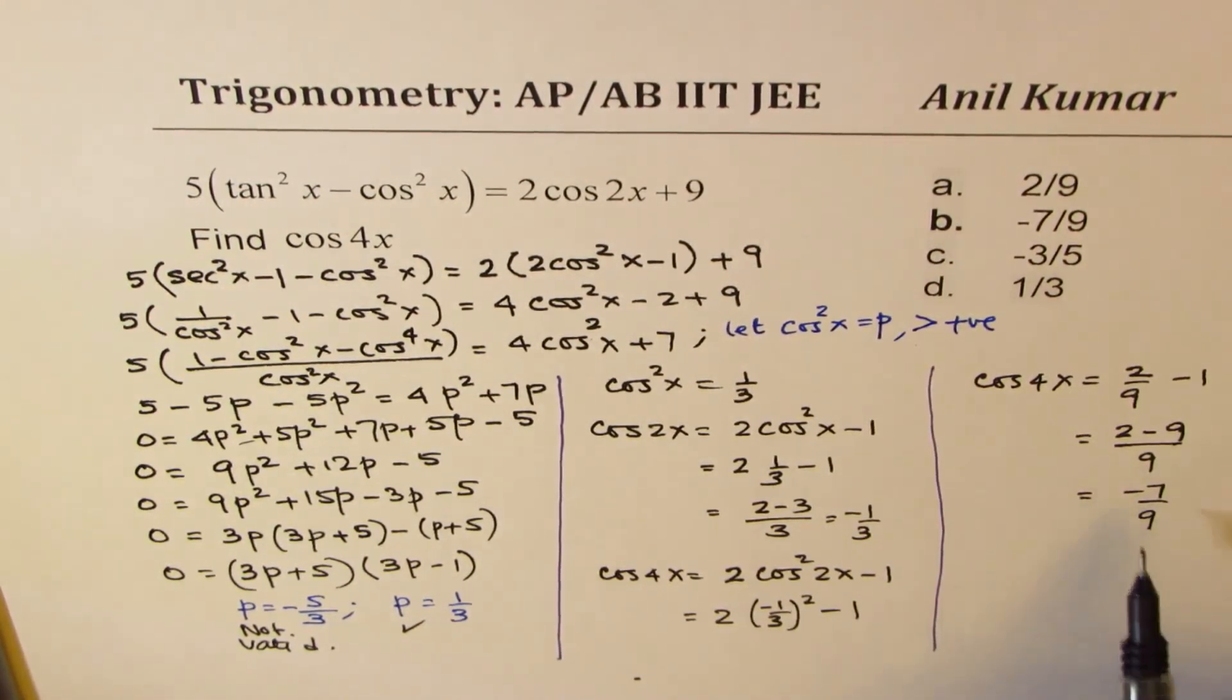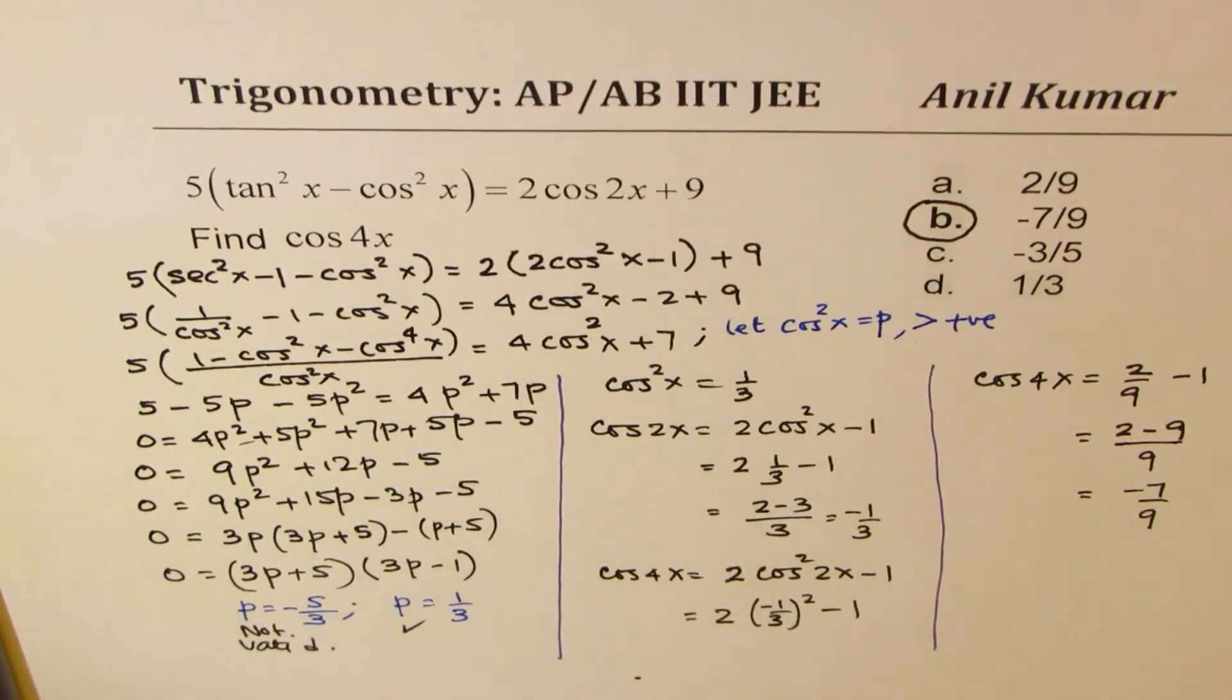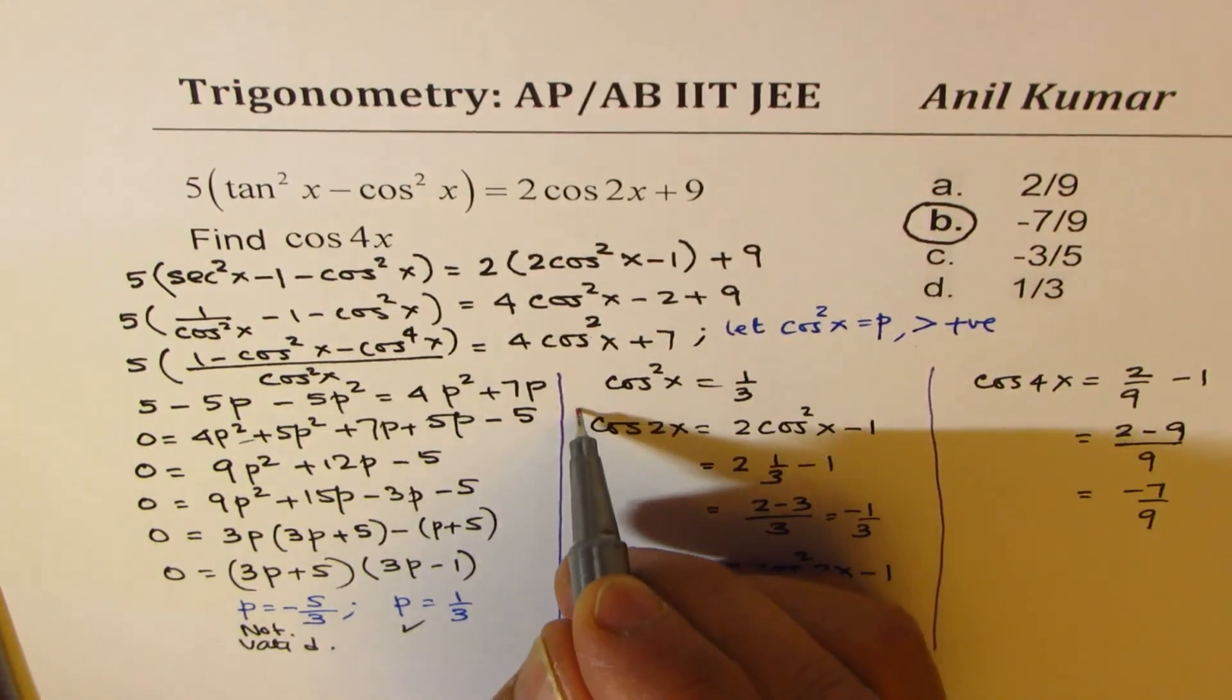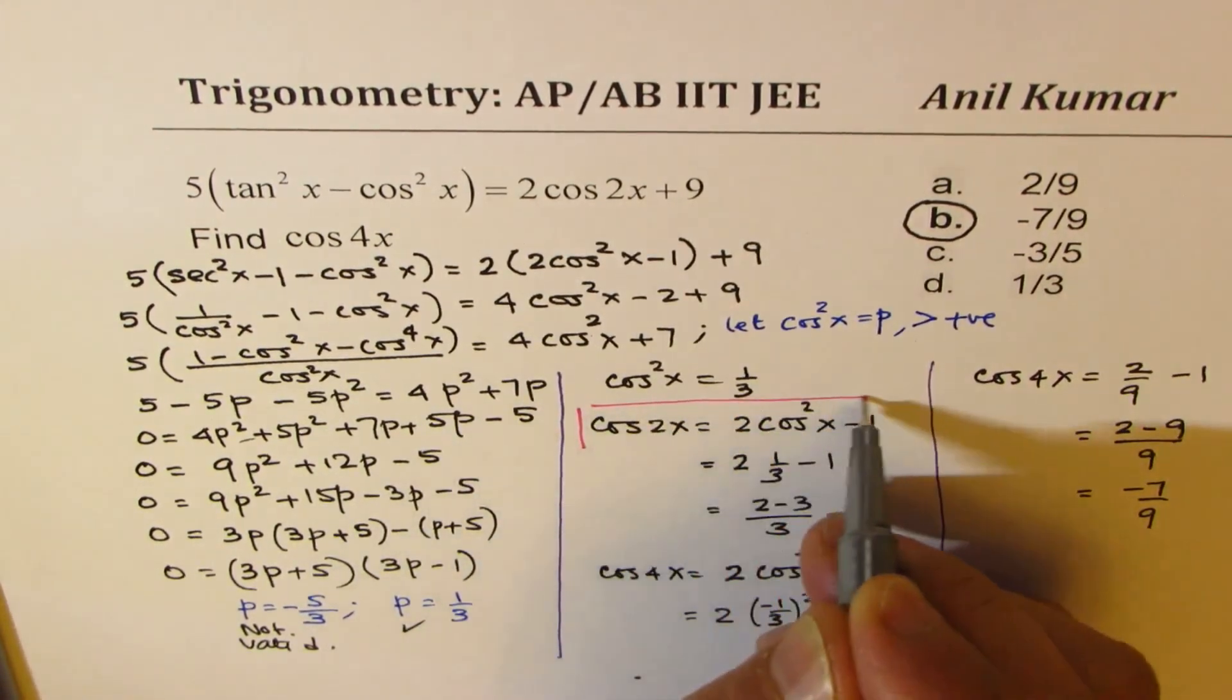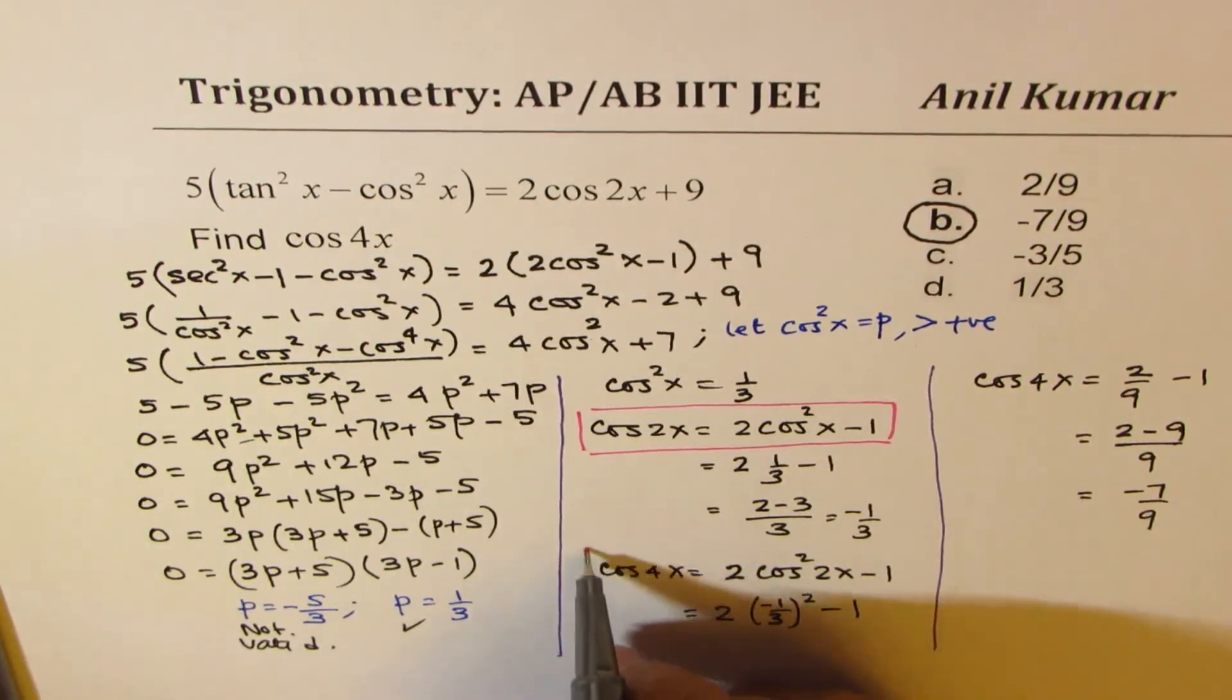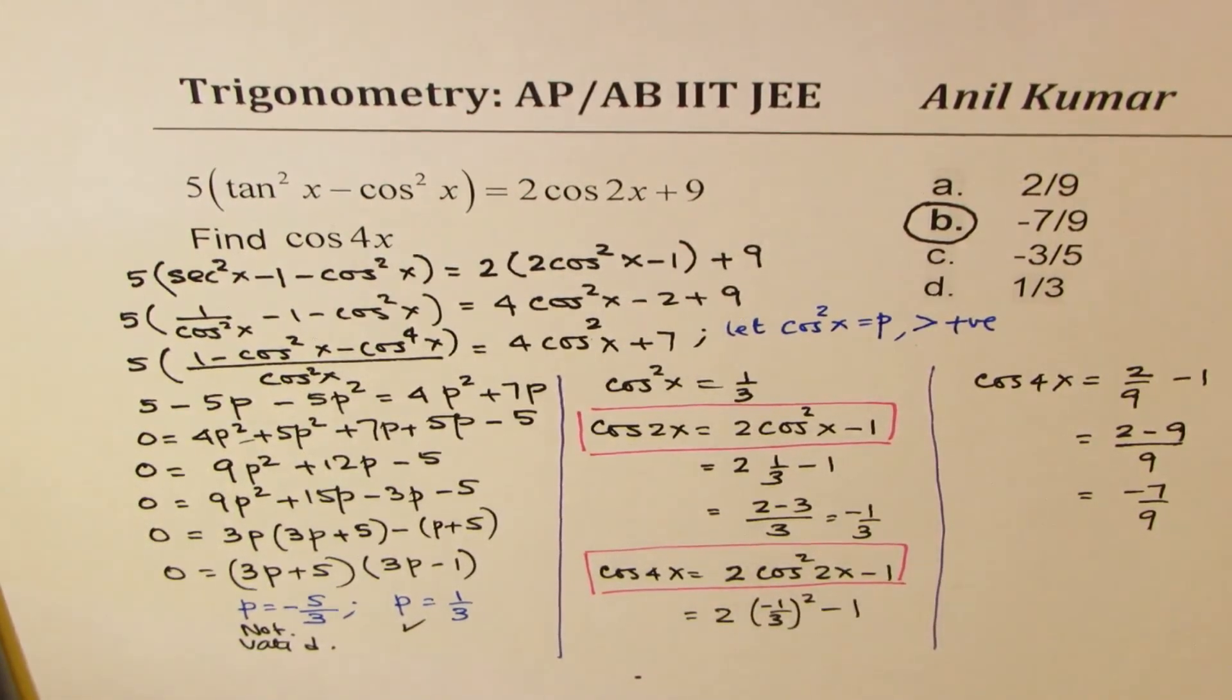So the right value for cos 4x is minus 7 over 9. So that is how we can actually solve this particular question. The identity which we basically used is the double-angle formula, which we used twice to find the value of cos 4x in this particular case.